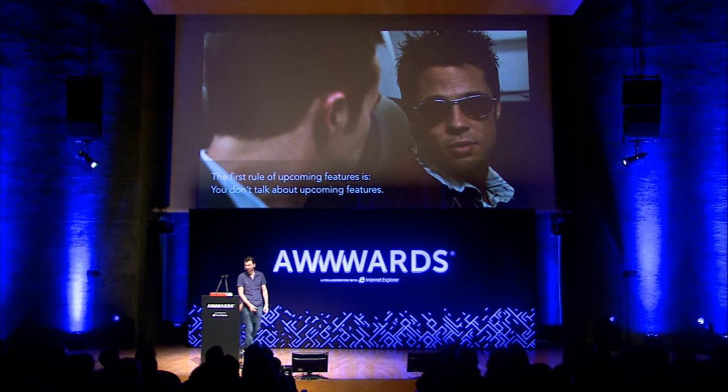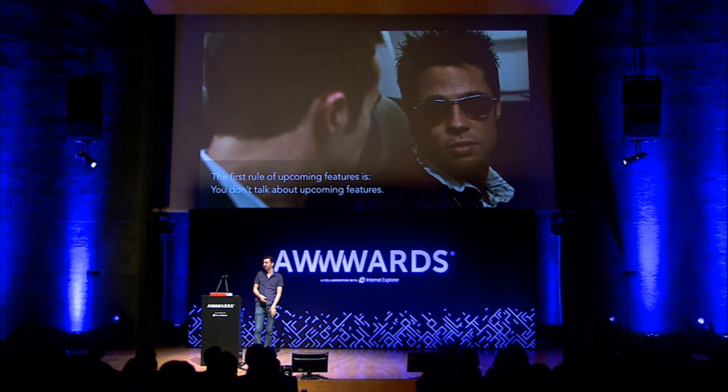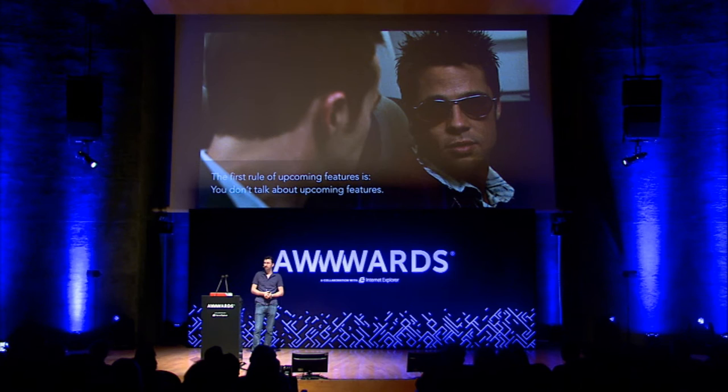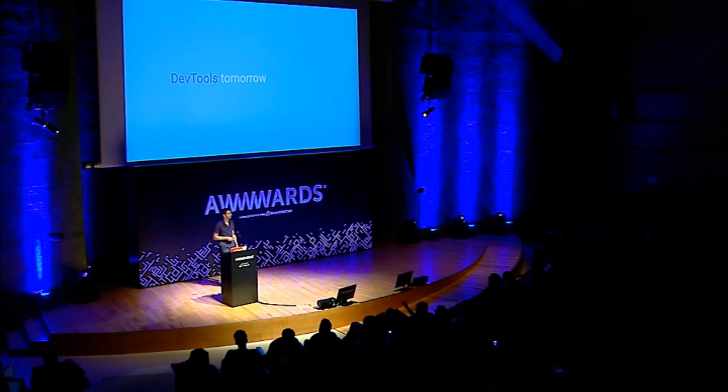And now for something different. The first rule at Google for upcoming features is you don't talk about upcoming features. I'm going to break that rule. There's one reason I can get away with that: Chrome DevTools is a completely open source project. All of this happens in open source, though most bug tickets are really well hidden in the bug tracker. Some of the ideas I'm going to share today don't have tickets yet — they will very soon. But this is all very new stuff. So: DevTools tomorrow.